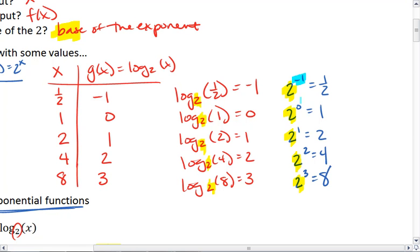What was originally our exponent in the exponential version, so what was originally our input, becomes the output in our log. And what was originally the output in our exponential is the input for the log.